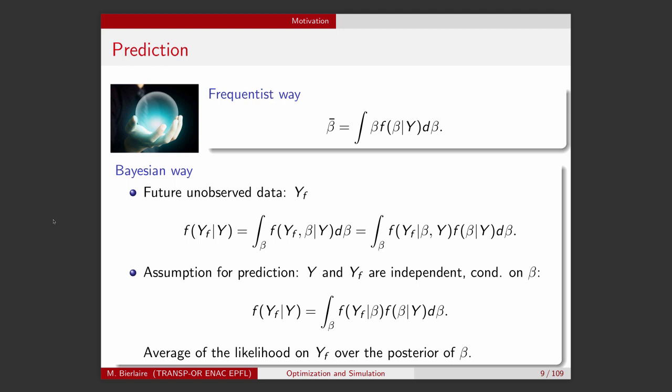The Bayesian context is also very useful when you want to do prediction. Actually, when you develop these kind of models, most of the time, what you would like to do is to predict. In fact, in the frequentist case, the way to predict would be to calculate the average values of the beta that I denote here by beta hat and to plug it in the model in order to use it as a predictor. But the Bayesian way uses a different technique.